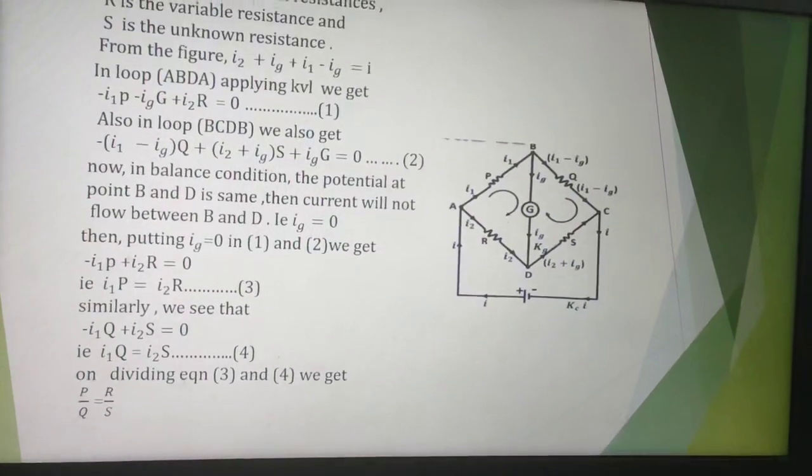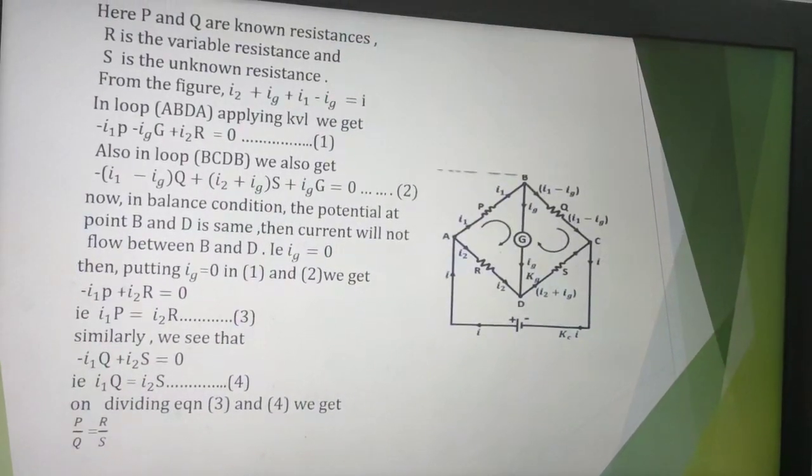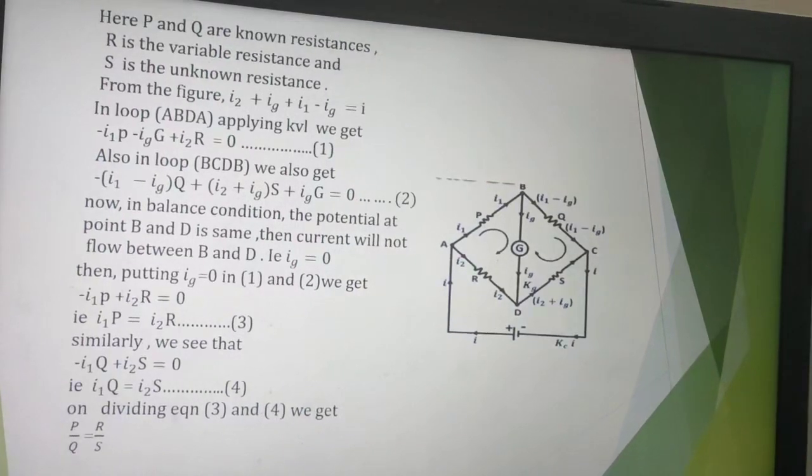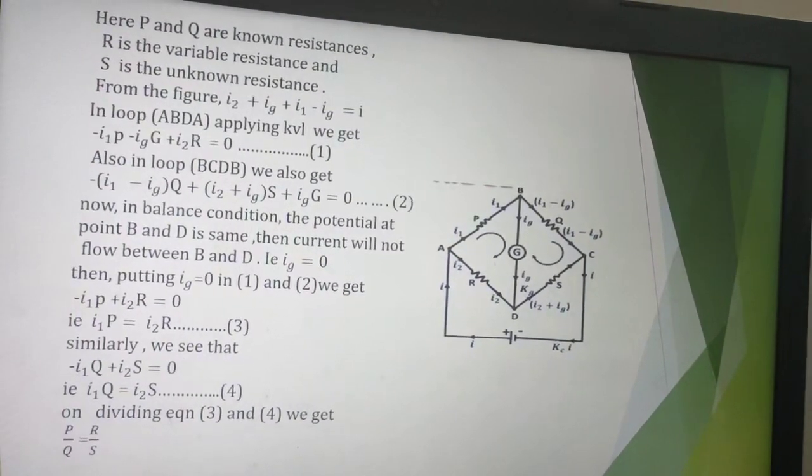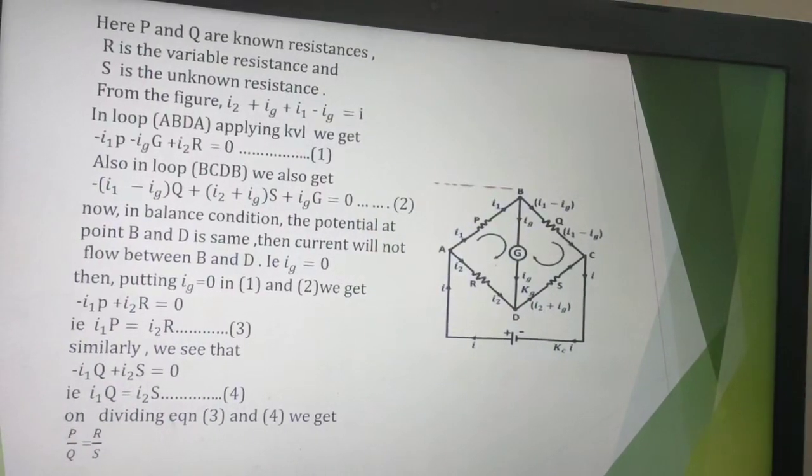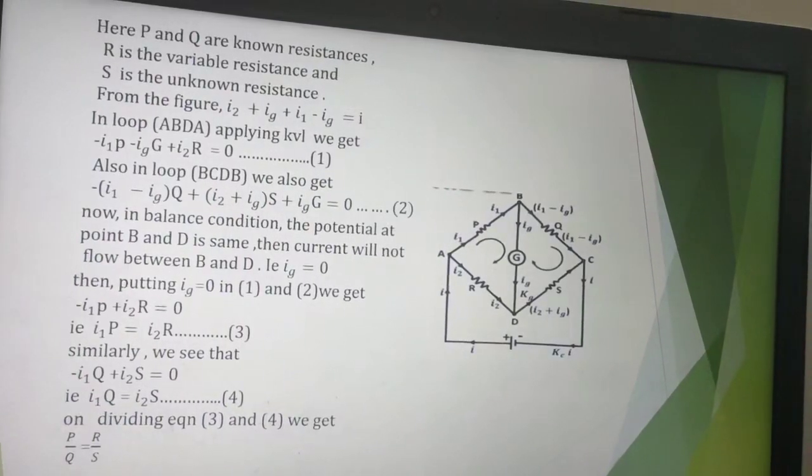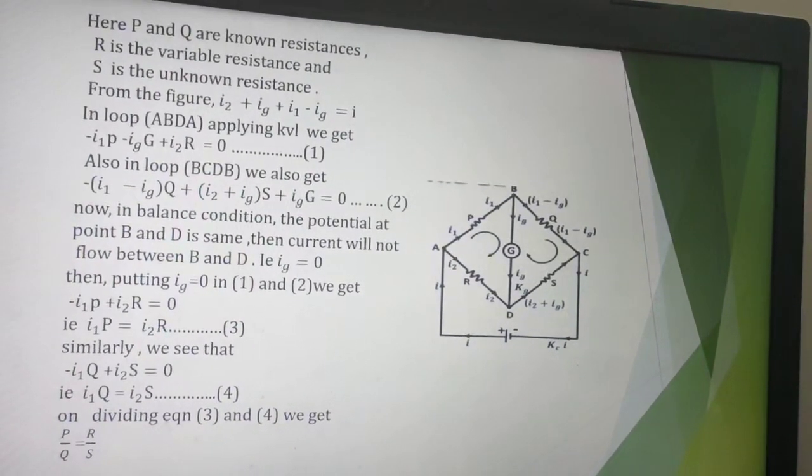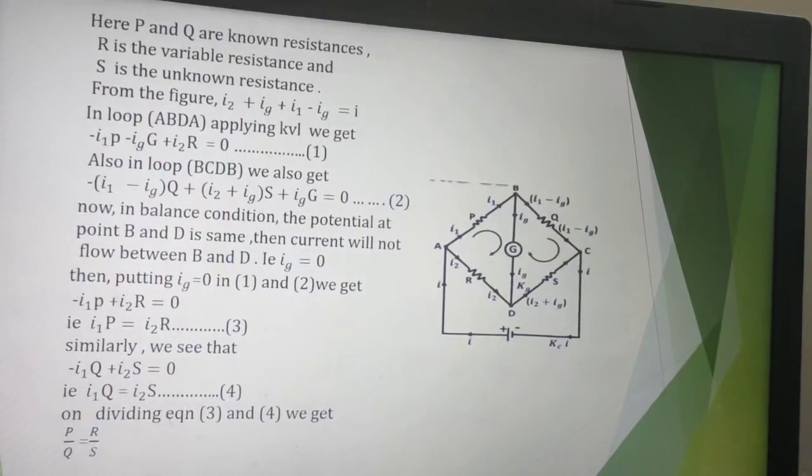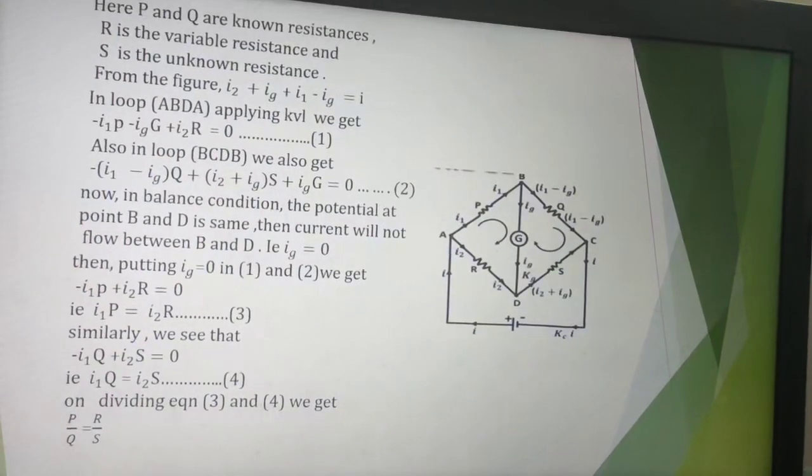Now in region AB, I1 into P. Here the sign is negative because the current direction and the loop direction is same. In region BD, IG into G. Here the sign will again be negative because the loop direction and current direction is same. In region AD, I2 into R. Here we will get positive sign because the current direction and the loop direction are opposite, which is equal to 0. Let us say this is equation 1.